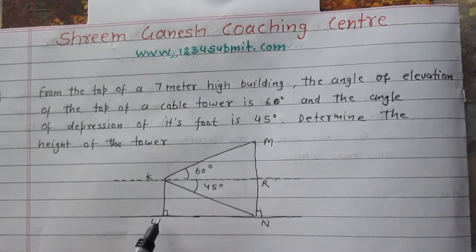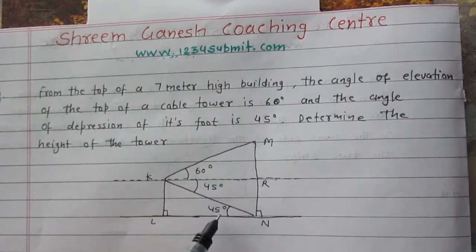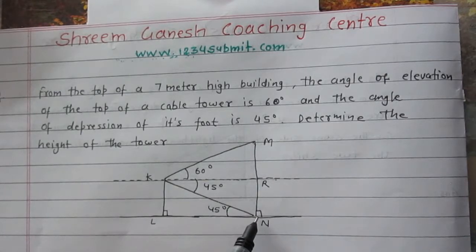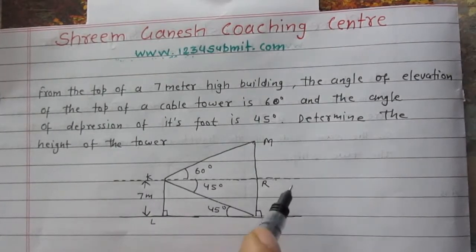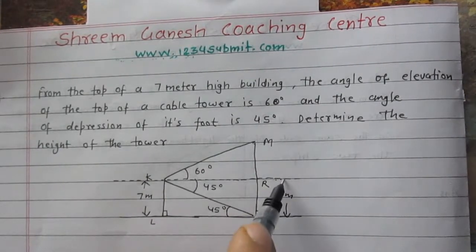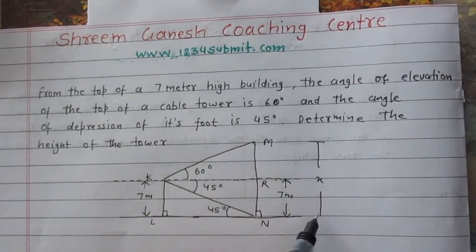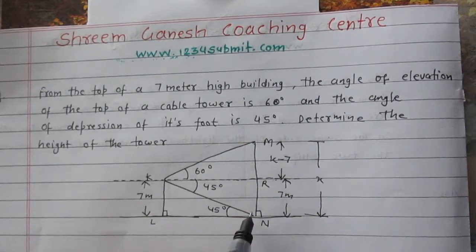Since KR NL is a parallelogram, the two angles at K and L are alternate interior angles. Because KR is parallel to LN, the angle at L is also 45 degrees. KL and RN are opposite sides of the parallelogram and therefore equal. Since KL represents the height of the building which is 7 meters, line segment RN is also 7 meters. So this portion of the tower RN is 7 meters. Let us consider the full height of the tower as X, so the portion MR is X minus 7.